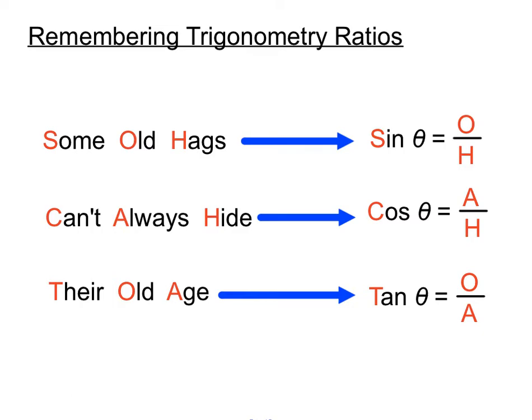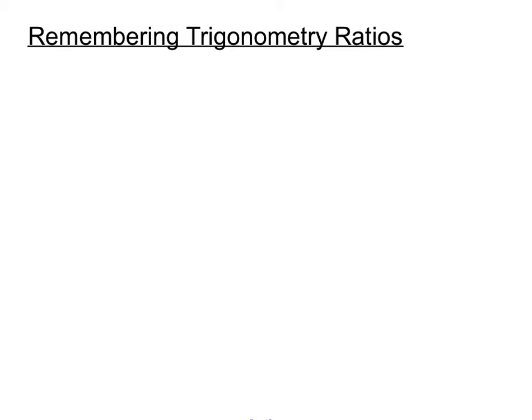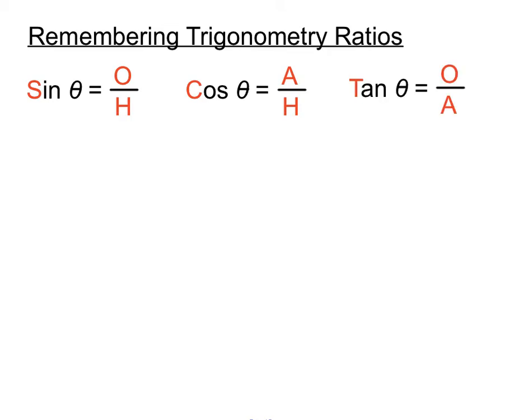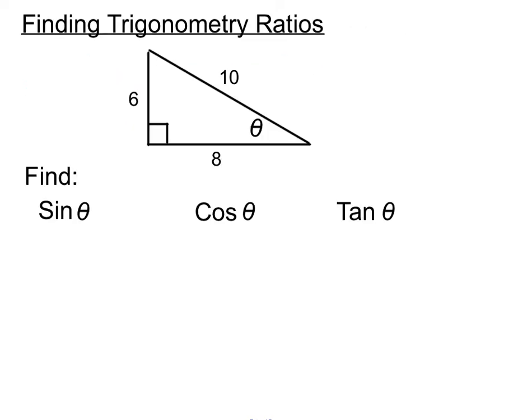Some students shorten it to "SOH-CAH-TOA", but you can always remember the full phrase: some old hags can't always hide their old age. So in our minds: sin equals opposite over hypotenuse, cos Theta equals adjacent over hypotenuse, and tan Theta equals opposite over adjacent. Those three trig ratios are the basis of many questions, so we need to remember them.